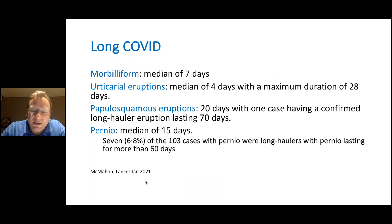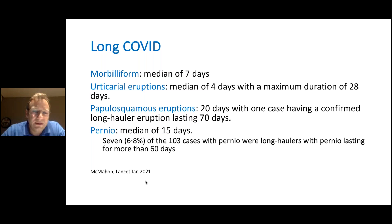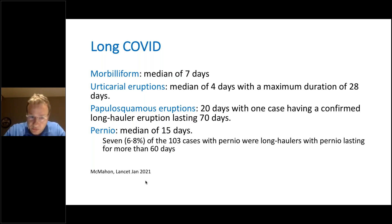Another topic is long COVID, because we are hearing more and more about this term. A very good review in the Lancet in January 2021 includes a dermatology section. They classified long COVID into four main cutaneous signs: morbidiform rash with a median of seven days, urticarial eruptions lasting up to 28 days after COVID, papulosquamous eruptions from 20 to 70 days after COVID, and perniosis with a median of 15 days and sometimes up to 60 days — around two months after COVID infection.